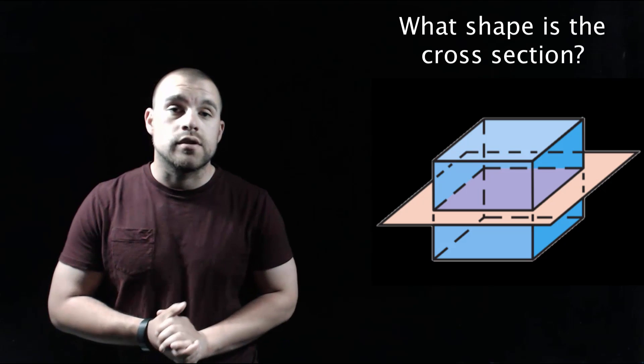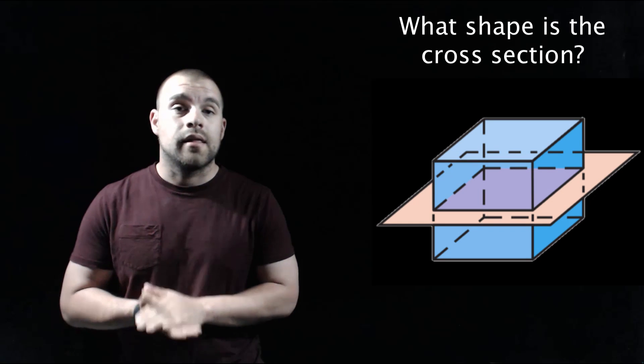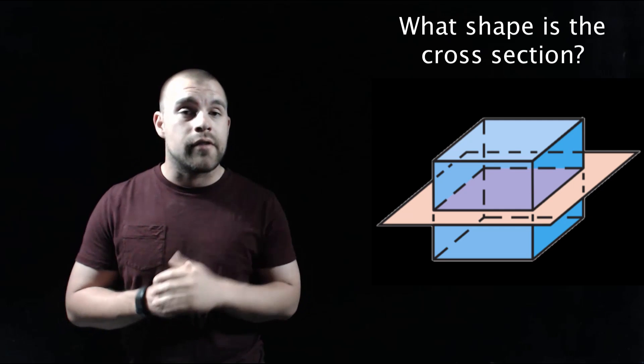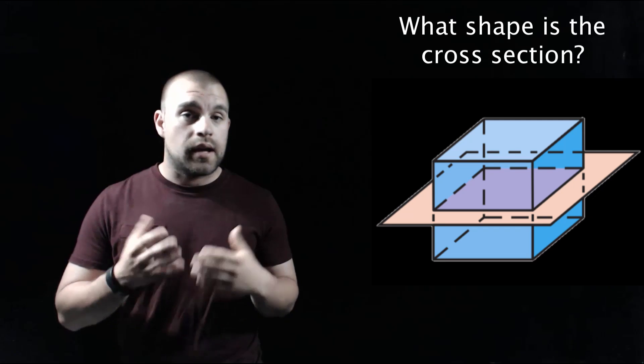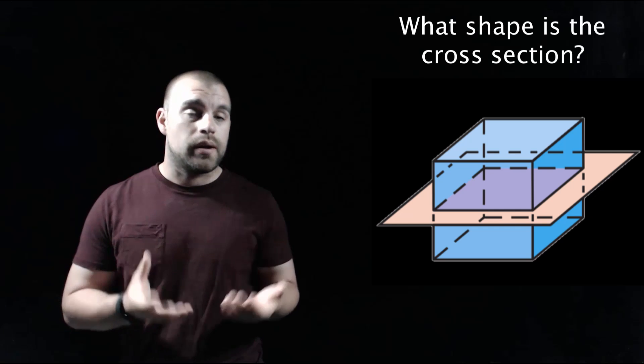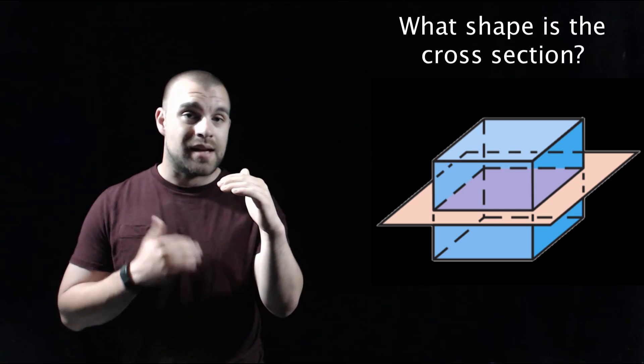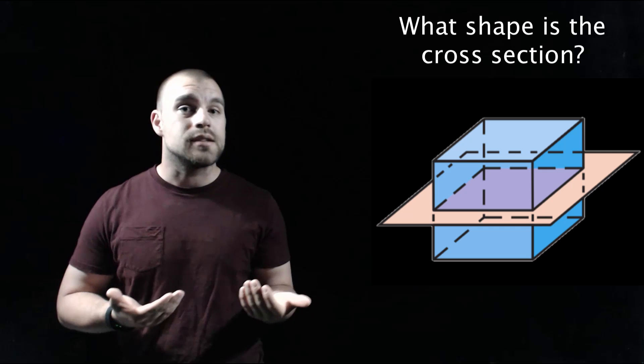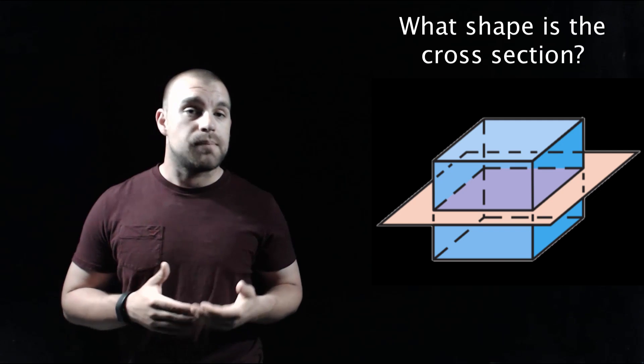If we take a look at this first example we've got a cube and the plane is parallel to the top and bottom of our cube. The shape that's created is going to be the exact same shape as the top and the bottom since the plane is parallel to those things. So that shape is going to be a square.